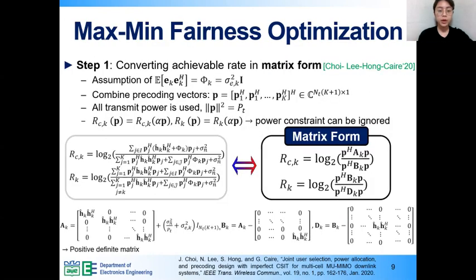In first step, for simplicity, by using a combined precoding vector p and assuming all transmit power is used, the achievable rates are simplified into the matrix form as shown in the equation on the right. Matrices A, B, D are shown in below. As you can see from the equation, regardless of the magnitude of precoding vector p, the value of rate is same, since the quadratic form of p is located both in denominator and numerator. So, the existing power constraint can be ignored.